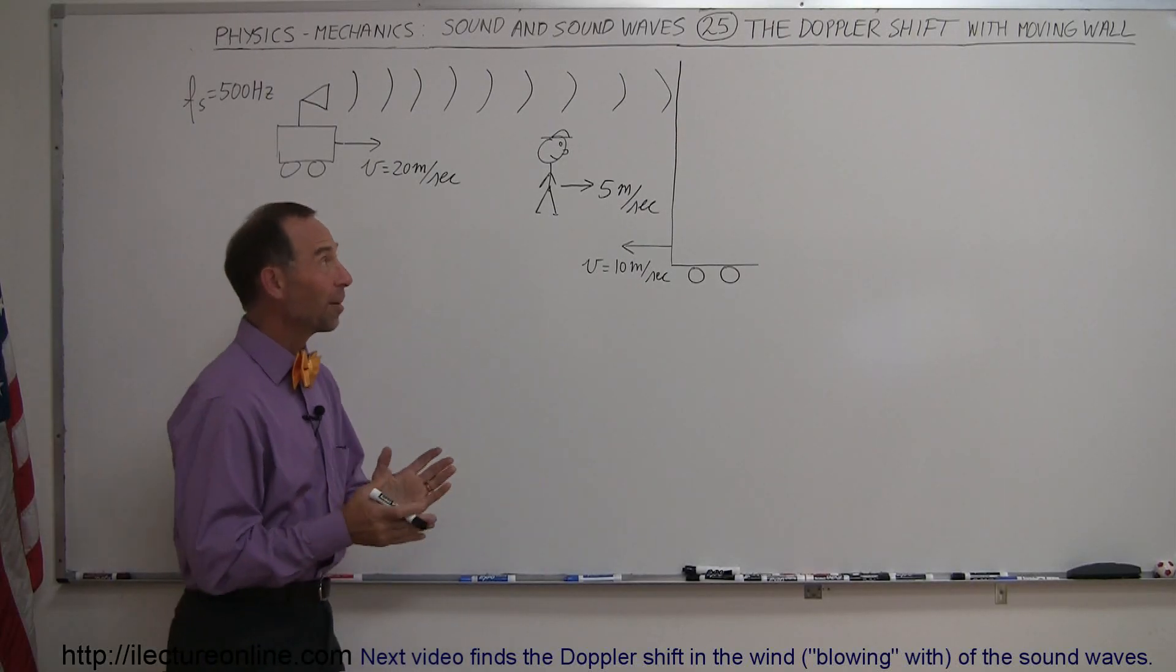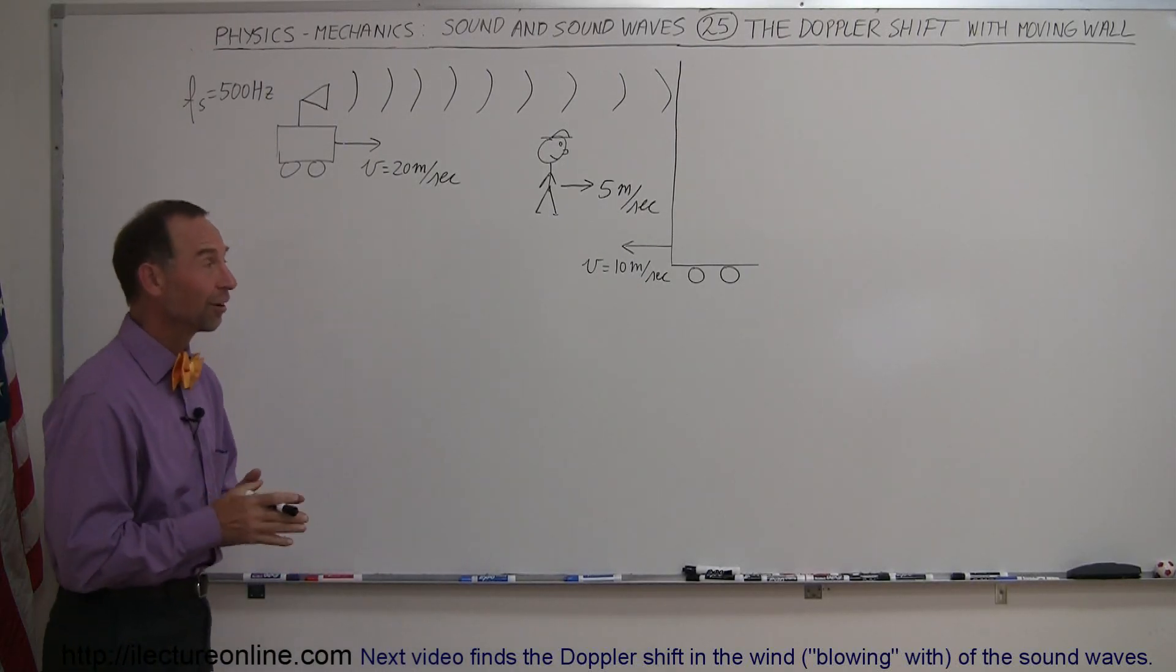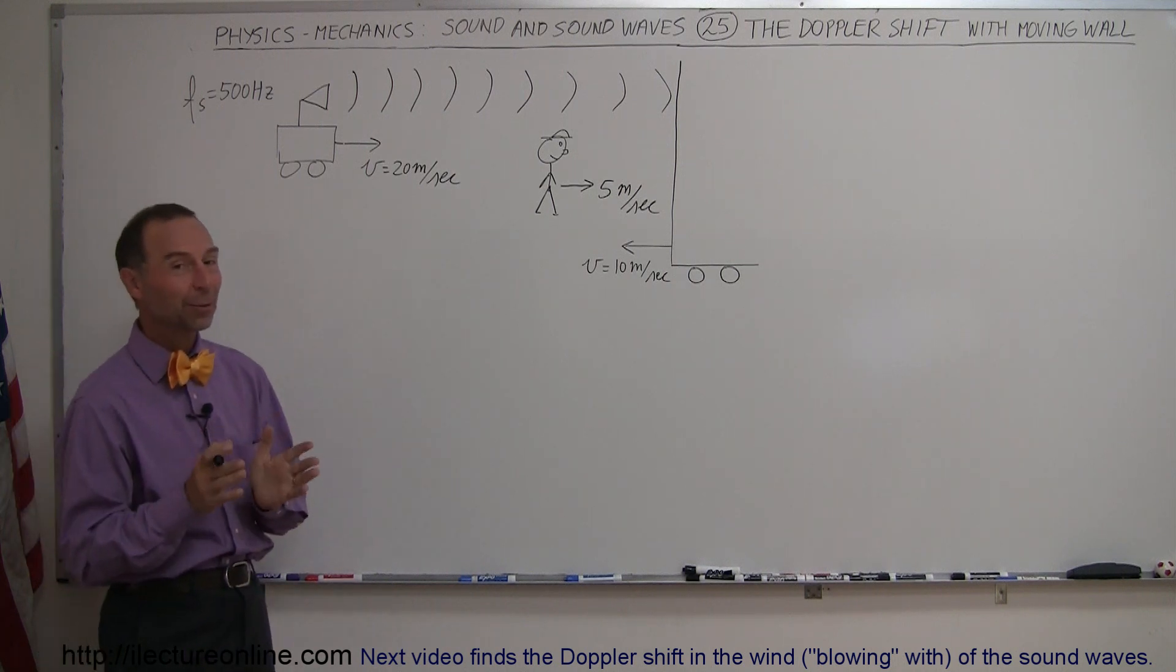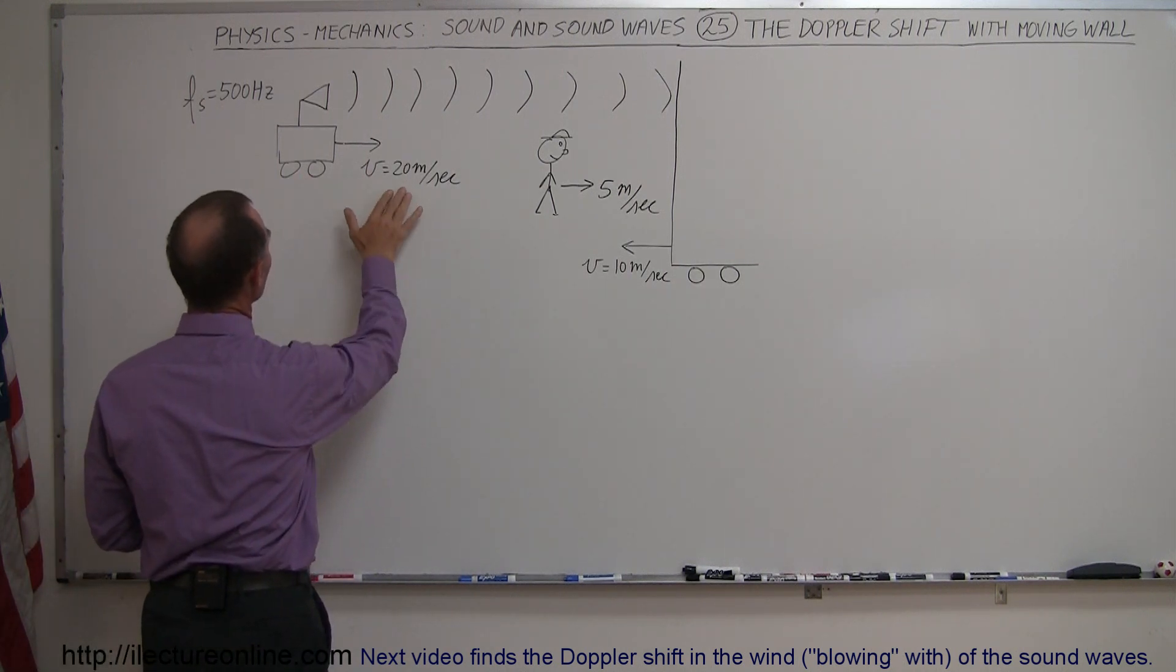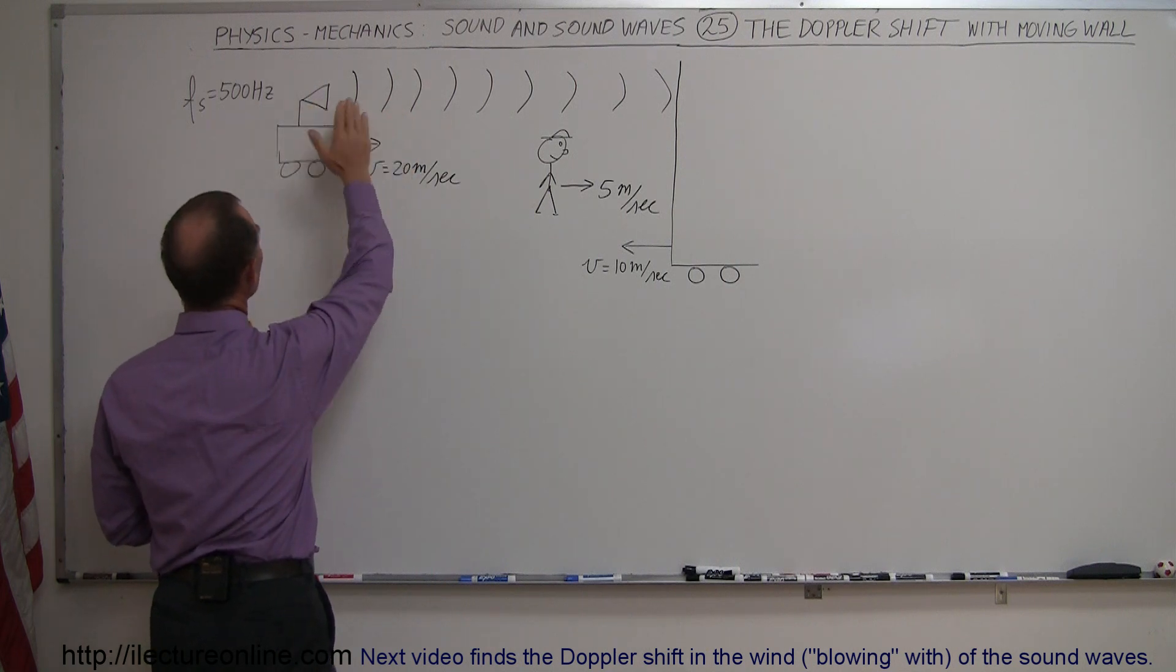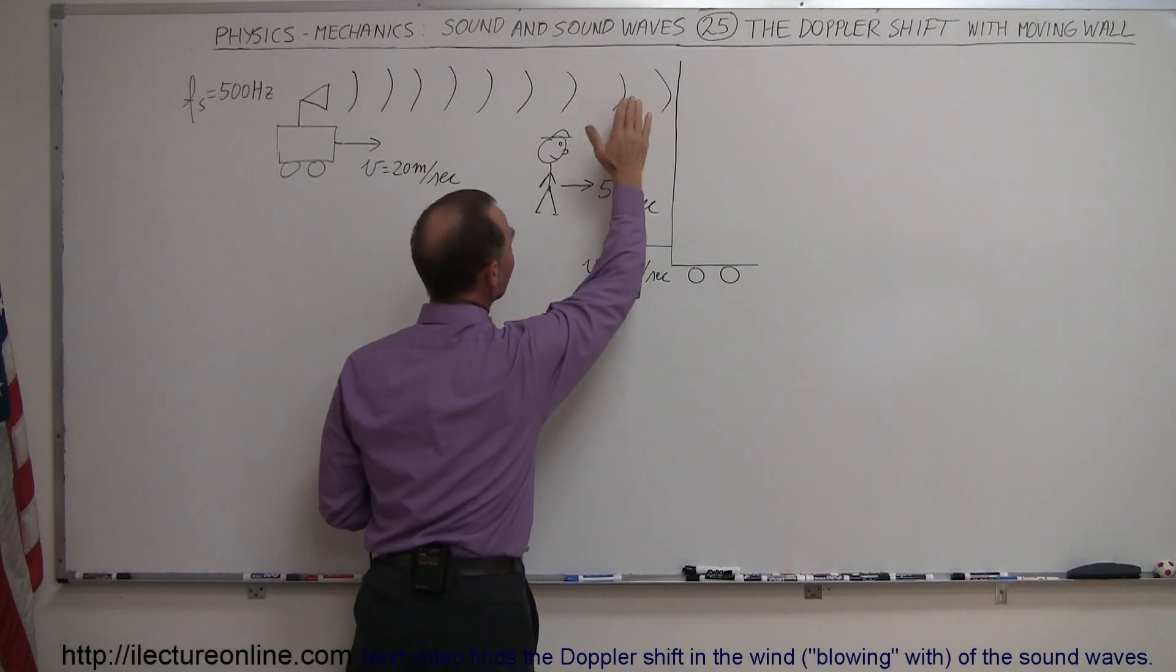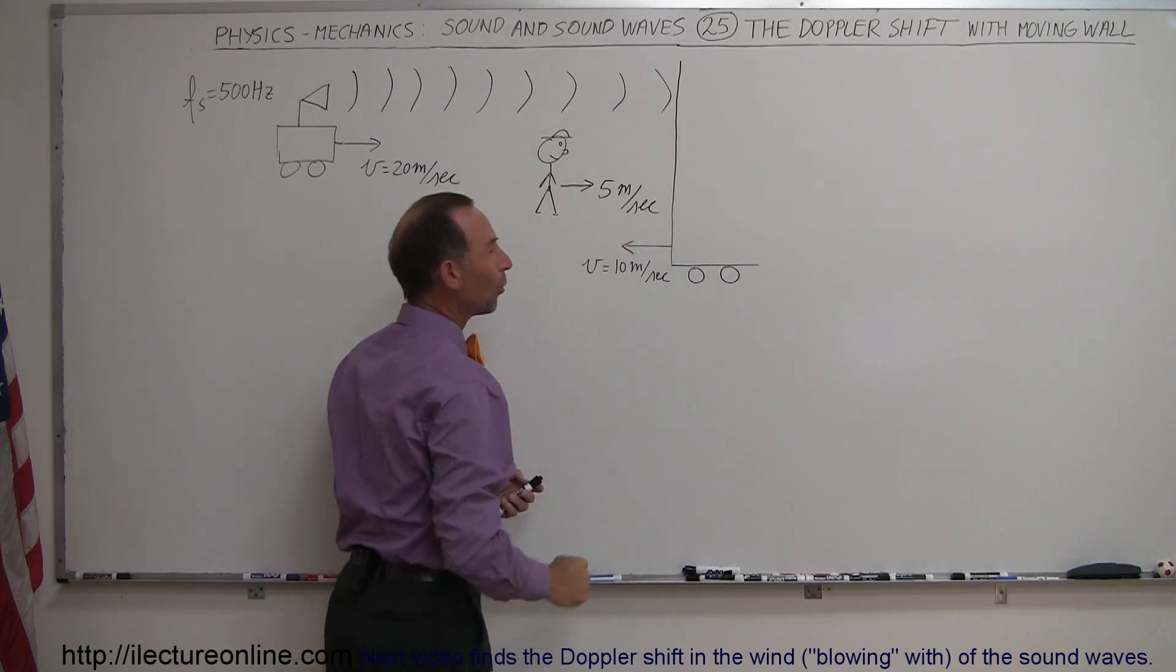Welcome to iLecture Online and our next example of how we deal with the Doppler shift is a really interesting example. Here we have a situation where I have a source which is moving to the right at some velocity, putting out a wave with frequency 500 Hz. It continues on to the right until it hits a wall.